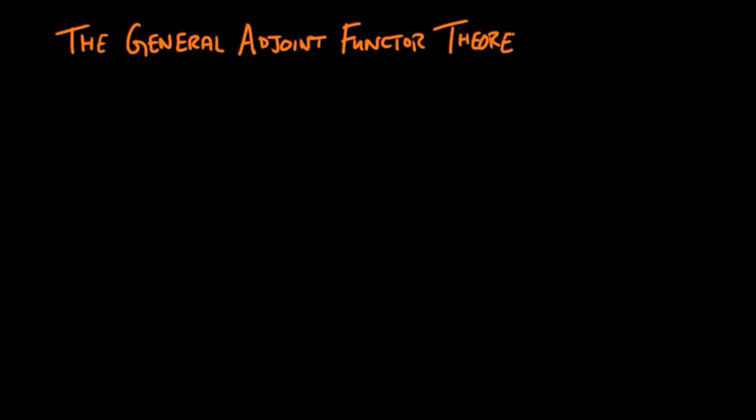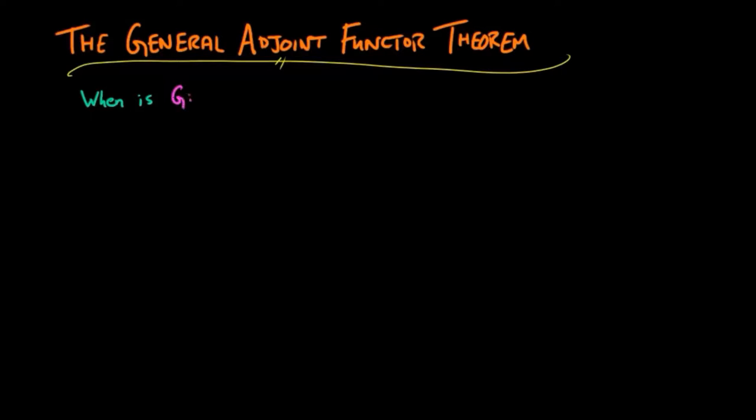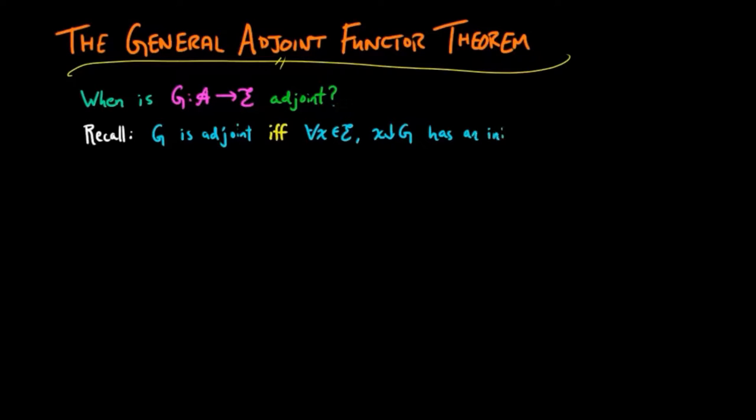The general adjoint functor theorem is one of the three or four main results in category theory. It provides us an easy way to verify that a functor G is an adjoint. The characterization of adjoint most useful for us in this section is that G is an adjoint if and only if for each object X in the codomain category, the undercategory X over G has an initial object. That initial object is given by the unit of the adjoint situation, usually written eta X.